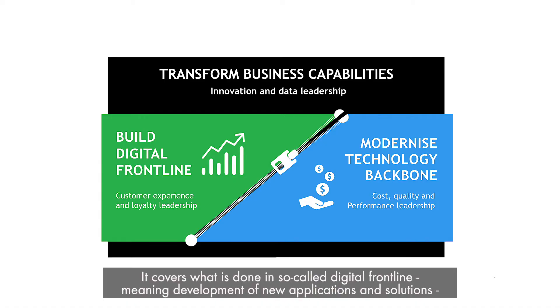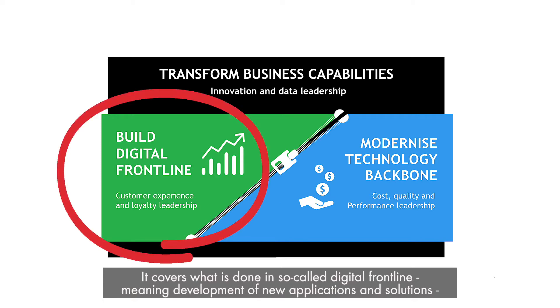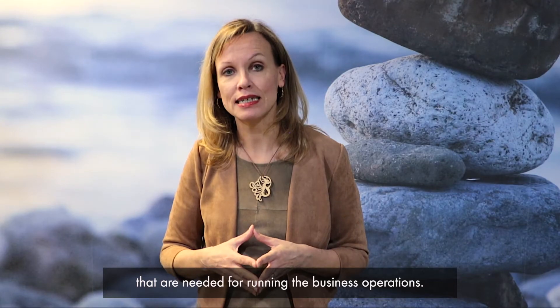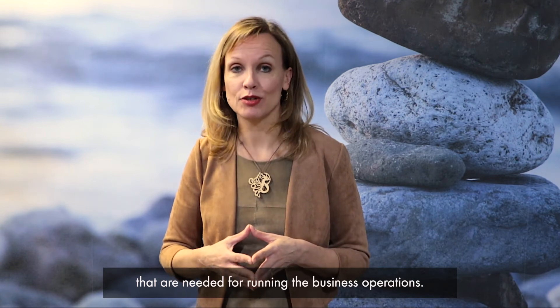The Business Technology Standard gives guidance to transform the business and organisation's capabilities. It covers what is done in the so-called digital frontline, meaning development of new applications and solutions, and what is done on the technology backbone — all those information technology systems and processes that are needed for running the business operations.